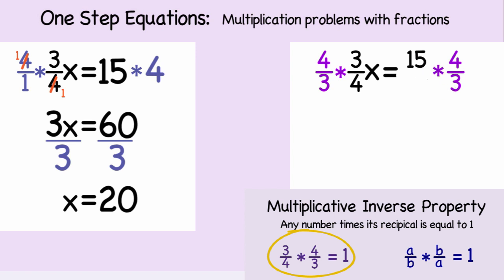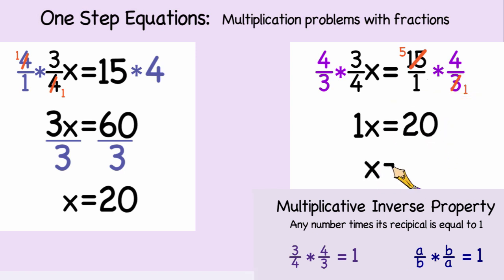On the left side of the equation, we'll be applying the multiplicative inverse property and get 1x. And on the right-hand side of the equation, we'll simplify the problem before multiplying. And when we multiply that out, we get 20. So x is equal to 20.